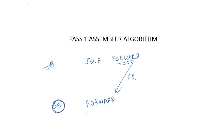To solve the forward reference problem, the assembler scans the code twice — this is called the two passes of an assembler. During Pass 1, the major job is construction of the symbol table, which contains all labels and their addresses, using the location counter. During Pass 2, actual translation takes place — object code is generated using the operation code table and the symbol table.